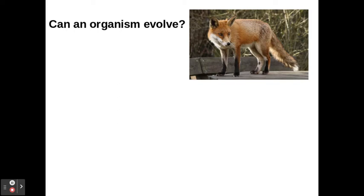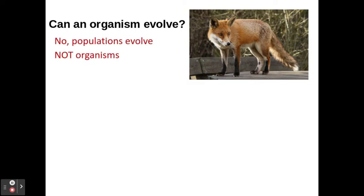So far in class we have been learning about microevolution and how when a population is evolving, what's happening is the frequencies of the alleles are changing over time. Can an organism evolve? Just one fox, for example — can that fox evolve? No. Populations evolve, so you can look at an entire group of foxes and over time their frequency of alleles can change, but just one organism cannot experience evolution.